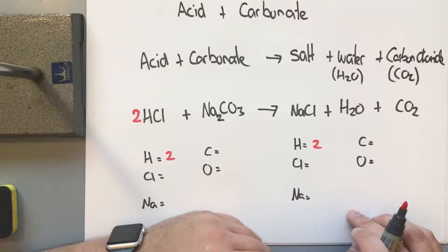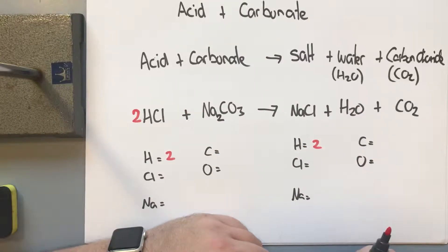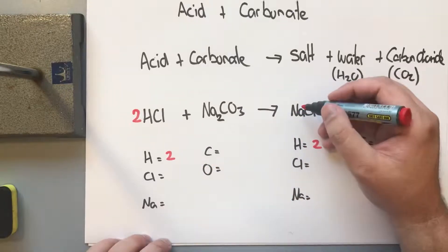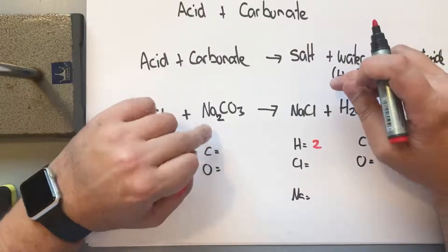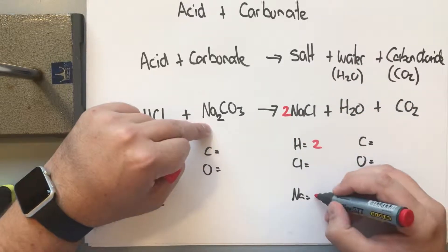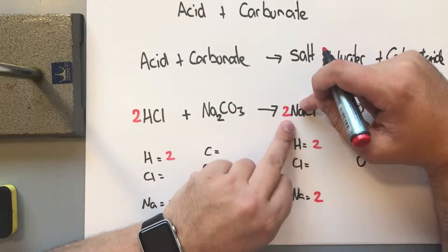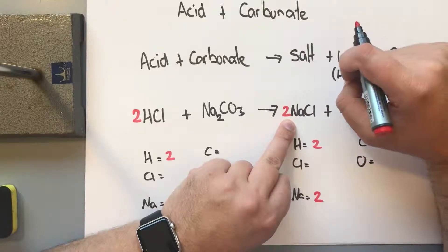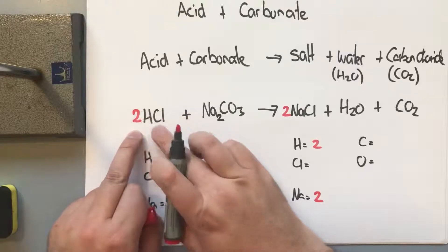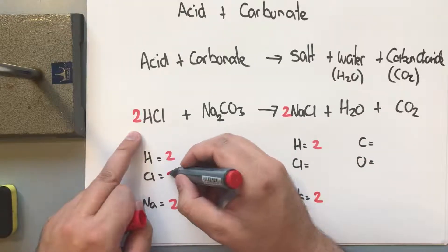Looking at chlorines: we have two chlorines on the reactants side now, but only one on the products side in NaCl. Looking at sodiums: we have two sodiums on the reactants side in Na₂CO₃, but only one on the products side. So we put a two in front of NaCl, giving us two sodiums on each side. That also means we now have two chlorines in the products, matching the two chlorines in the reactants — so chlorines are balanced too.